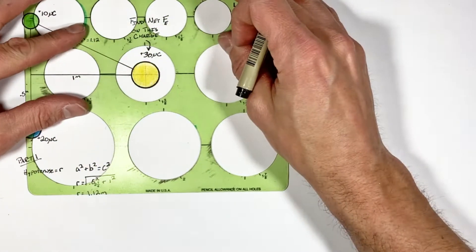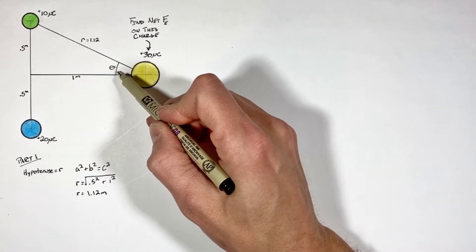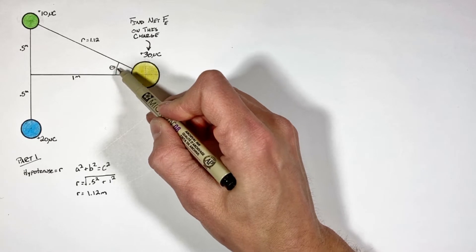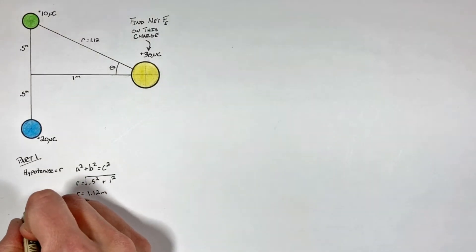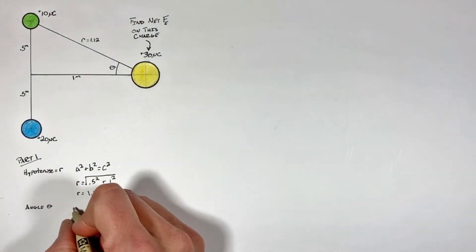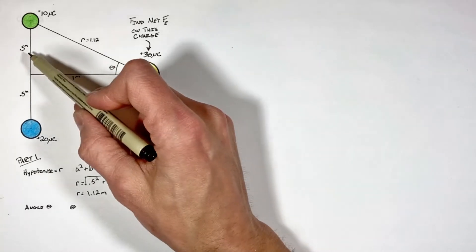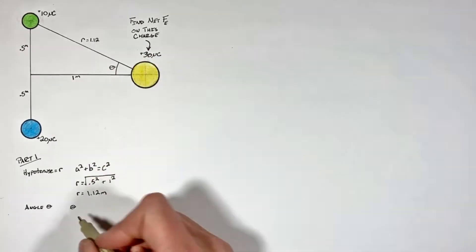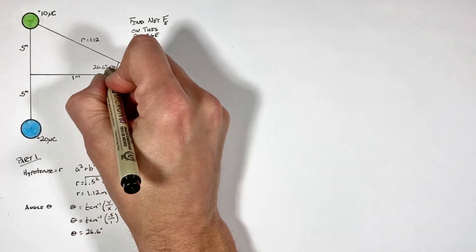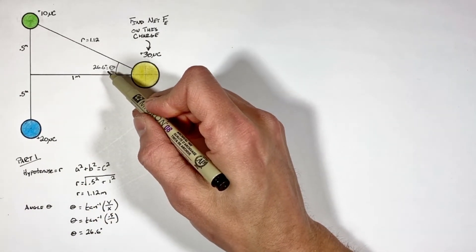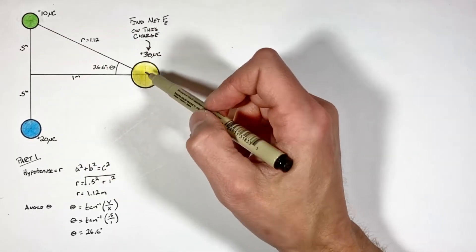Next we need to work out the angle between this hypotenuse and the horizontal axis. This angle isn't part of Coulomb's law directly, but the reason we need it will become apparent a little later on. This angle can be solved by taking the inverse tangent of the rise over the run of this triangle, and we find that angle is 26.6 degrees.